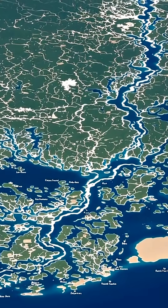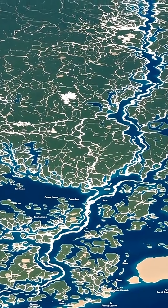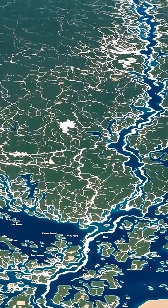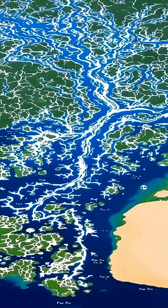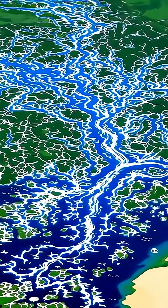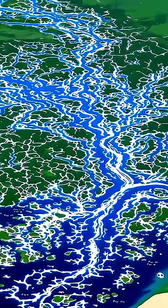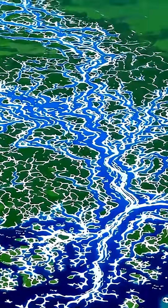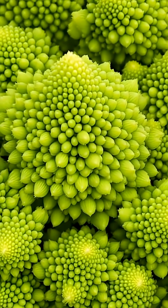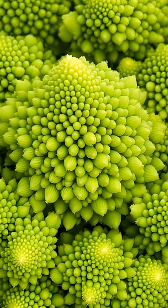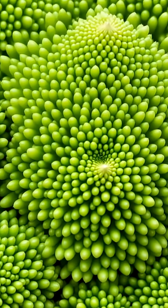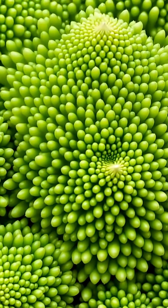Rivers divide into smaller and smaller channels, creating deltas, where fractal patterns govern water's journey. Each bud of this Romanesco is a miniature copy of the whole — a perfect example of fractals in food.